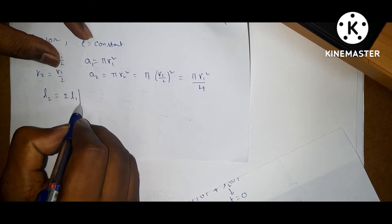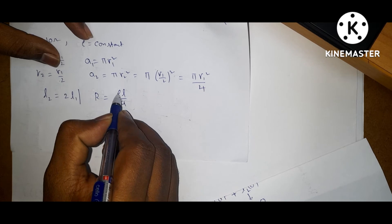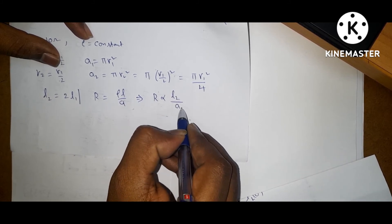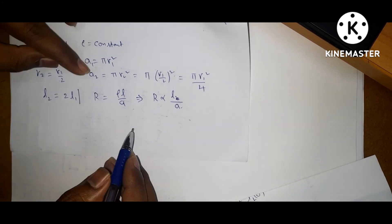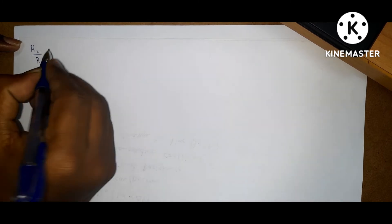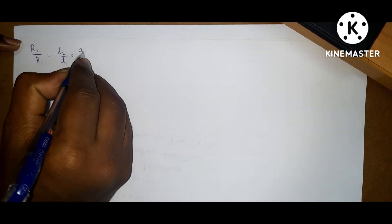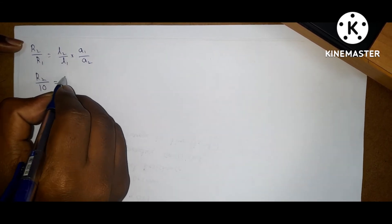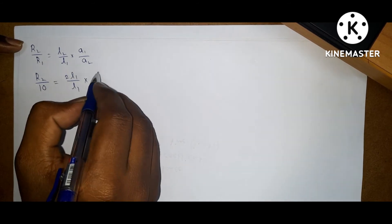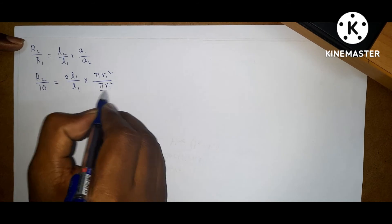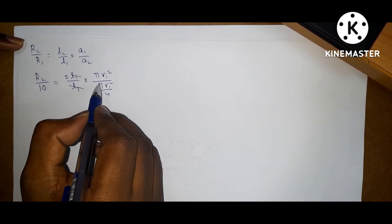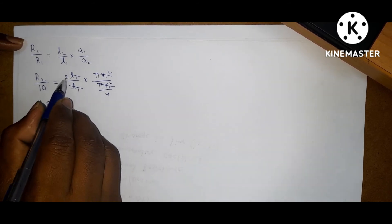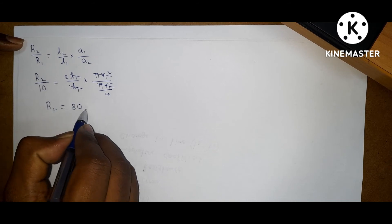Write the formula: resistance R is equal to rho L by A. Since resistivity is constant, R is directly proportional to L by A. So R2 by R1 is equal to L2 by L1 into A1 by A2. Substituting: R2 by 10 equals 2L1 by L1 into pi R1 square divided by (pi R1 square by 4). L1 and pi R1 square cancel, leaving R2 equal to 2 into 4, which is 8, so R2 is 8 into 10, giving 80 ohms.